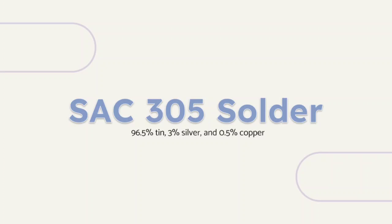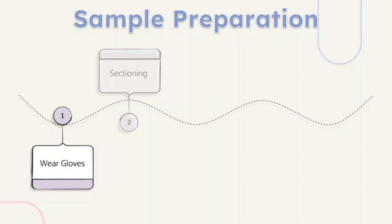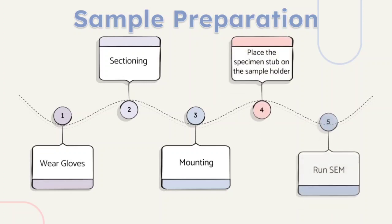SAC-305 solder is given to design and carry out a morphology characterization. SAC-305 is a lead-free alloy that contains 96.5% tin, 3% silver, and 0.5% copper. In general, there are a few steps required for sample preparation: wear gloves, sectioning, mounting, placing the specimen stub on the sample holder, and running the SEM.